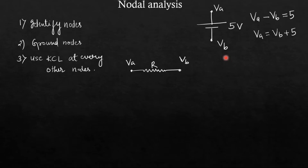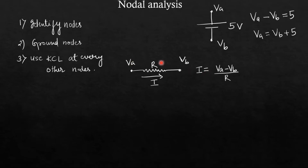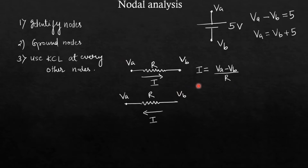In the second case we have a resistor with two terminals. One terminal has voltage Va and the other has voltage Vb. If we want the current in one direction, the expression is I equals Va minus Vb divided by R. If we want the current in the other direction, the expression becomes Vb minus Va divided by R.